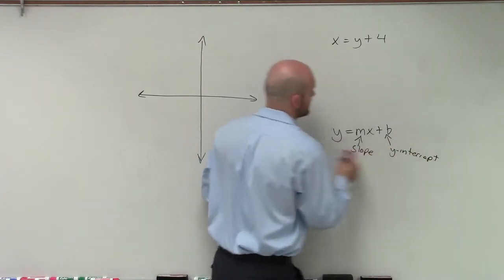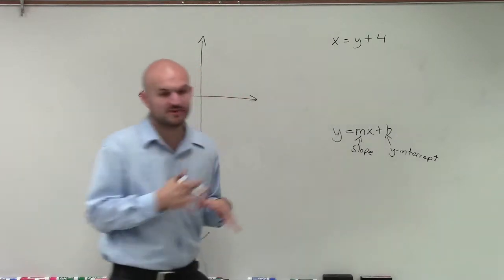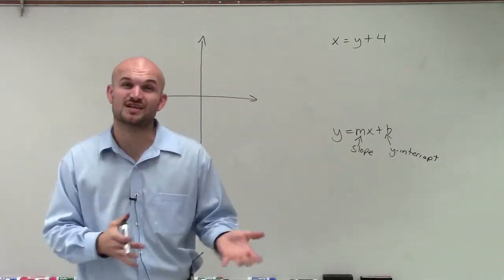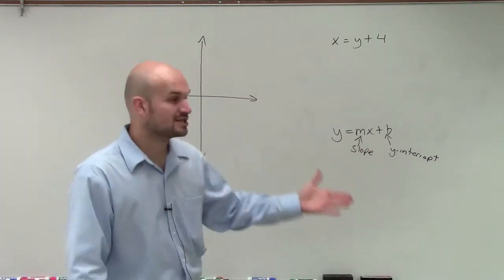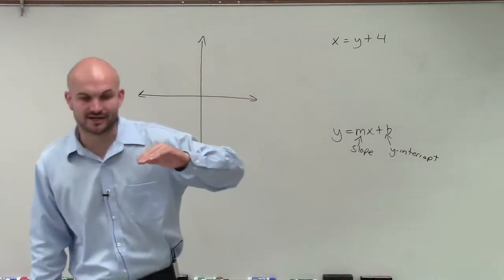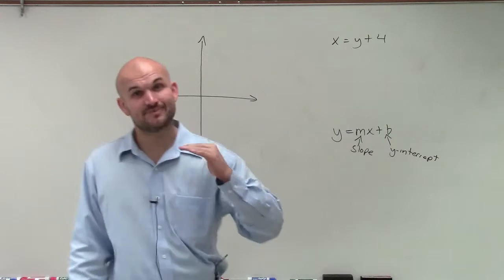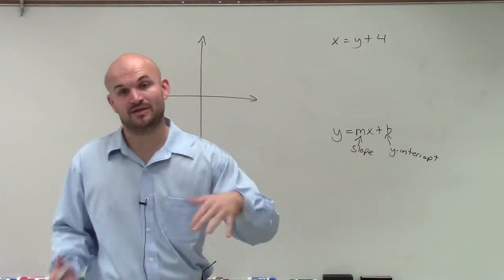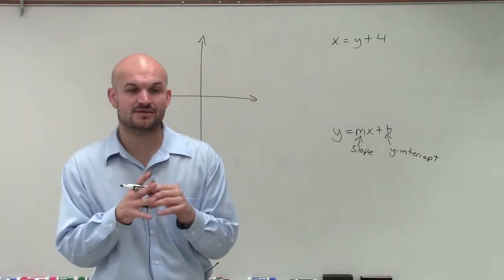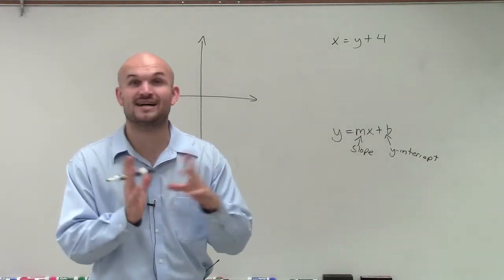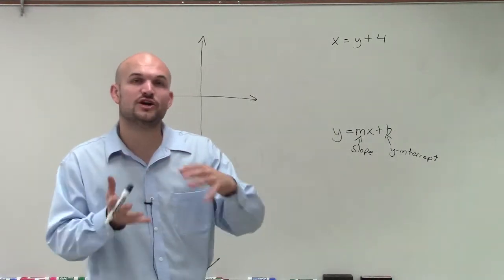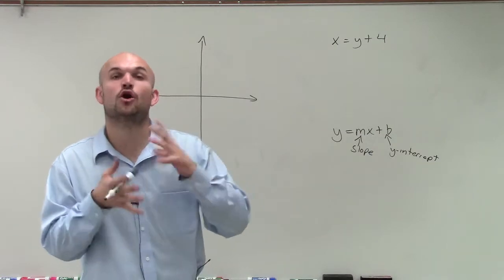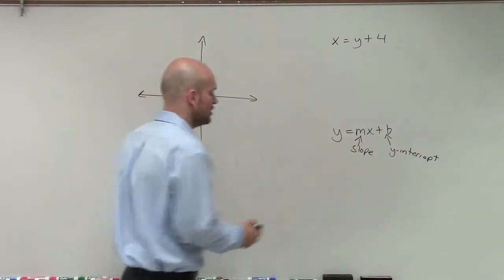The y-intercept is where the graph crosses your y-axis, and the slope is going to be the steepness of our graph. What we like to sometimes call it is the rise over run, or really the change in our y-coordinates over the change in our x-coordinates.